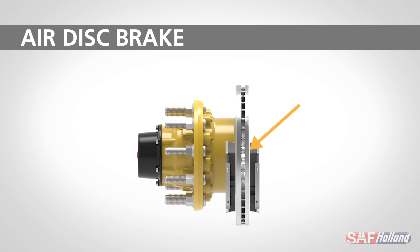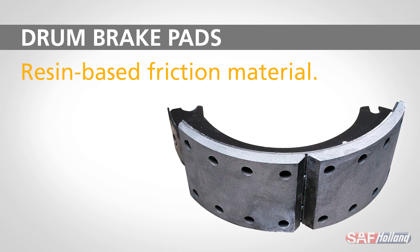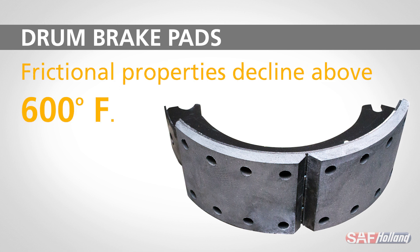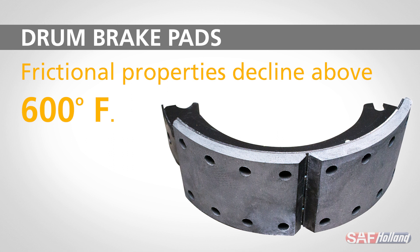And on a disc brake, it occurs where the brake pad surface contacts the rotor surface. The vast majority of drum brake pads are manufactured with a friction material that is held together with resin. Issues arise, however, when the brake lining reaches temperatures above 600 degrees Fahrenheit.